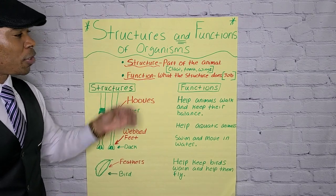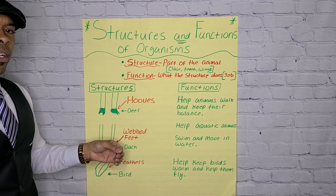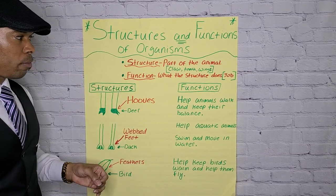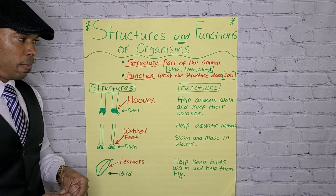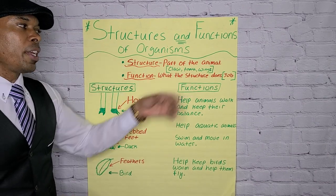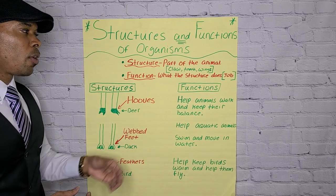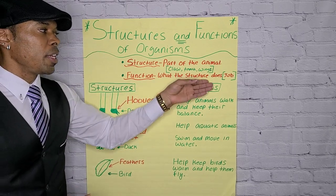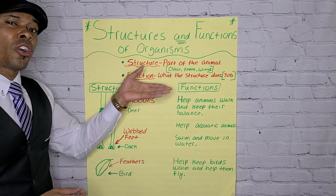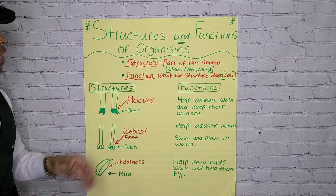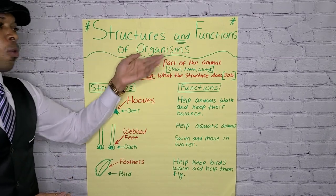So when you look at structure, you're looking at claw and you're looking at the function of the claw. When you look at teeth, what is the function of the teeth? When you think about wings, what is the function of wings? What does the wings do? What does the teeth do? What does the claw do? And when you tie them both together, you have structure and functions of organisms.